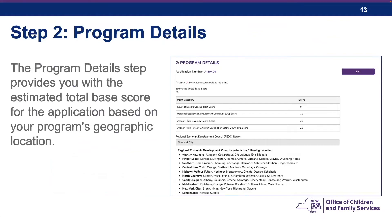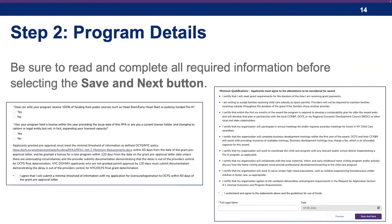Step two is program details. This step provides you with the estimated total base score for the application. The score is automatically calculated using the points category and Regional Economic Development Council (REDC) where the applicant's facility will be located. Estimated RFA base scores can go up to 100 points. The higher the base score, the more likely a program is to be funded, but no program is guaranteed funding. The base score does not include bonus points available for infant and toddler care or non-traditional hours. Scroll to the bottom of the page, review the commitment to submitting licensing information within 60 days, check the "I agree" box, read the minimum qualification statement, type your full legal name, and click Save and Next.